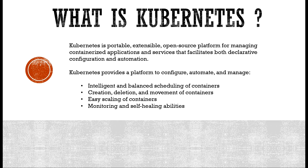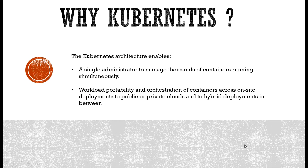You can easily solve issues that arise in containers. For example, if for some reason one of the containers defined in the deployment crashes, Kubernetes checks and always ensures that the correct number of containers or pods are running in production. If one of the containers goes down, Kubernetes immediately takes care of it and ensures that a new container is created.